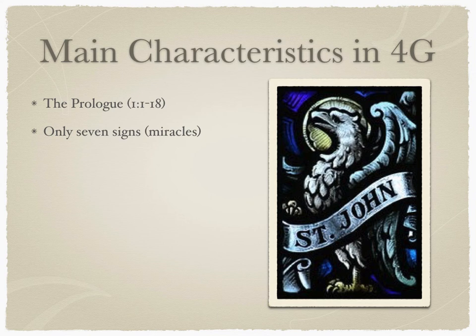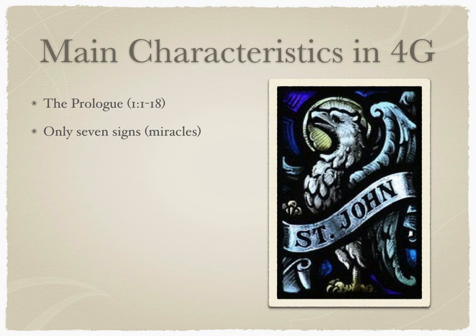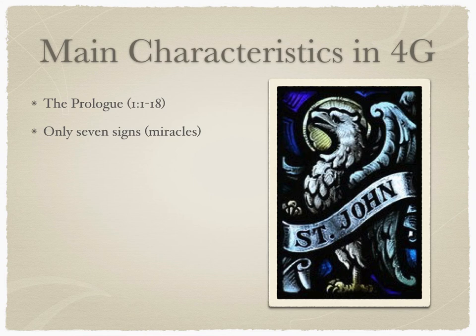The other one is the seven signs. Jesus performs miracles in all four of the Gospels, but in the Gospel of John the writer never calls them miracles — he only calls them signs. He did this sign so that X, Y, Z. The Gospel of John refers to the miracles that Jesus performs as signs that point to Jesus' identity, which is very unique to the Gospel of John.